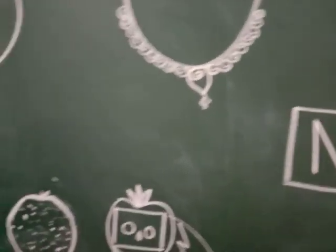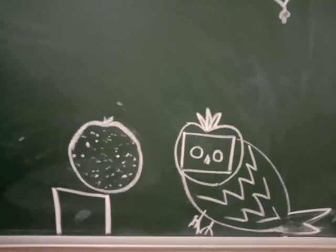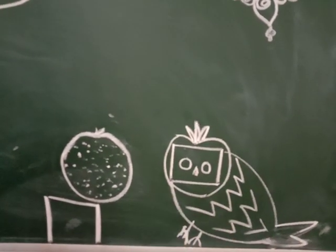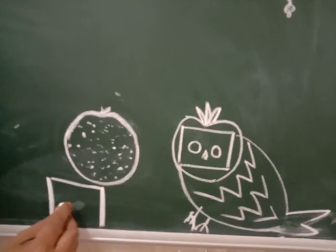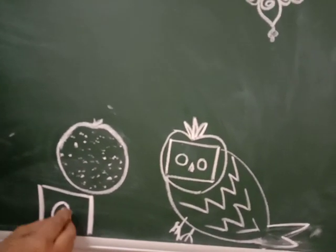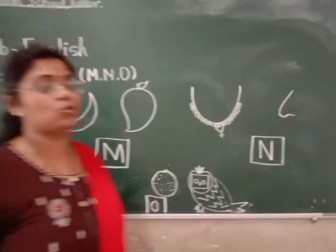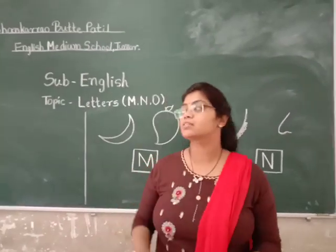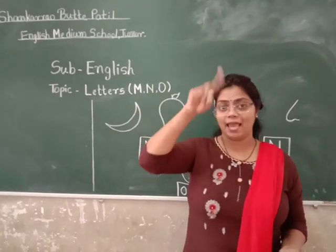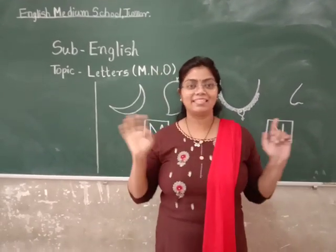O for orange — it is an orange. And it is an owl, the bird. Owl starts with letter O. Letter O. So students, today's homework is you have to learn these three letters — how to write, and with the help of strokes you will write letter M, letter N, and letter O. Bye-bye kids.